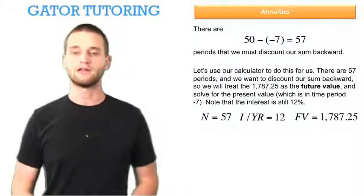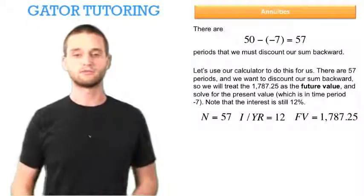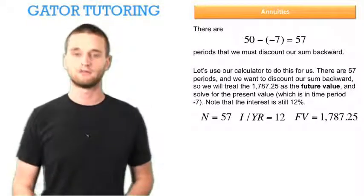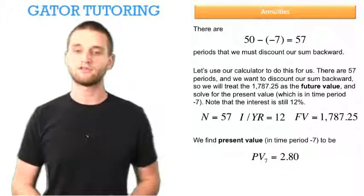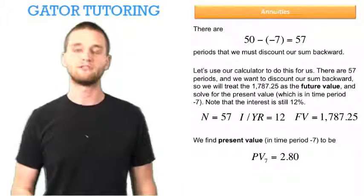And the future value is what we found the value of the annuity to be, which was $1787.25. So we find the present value, which is in time period negative 7, to be $2.80.